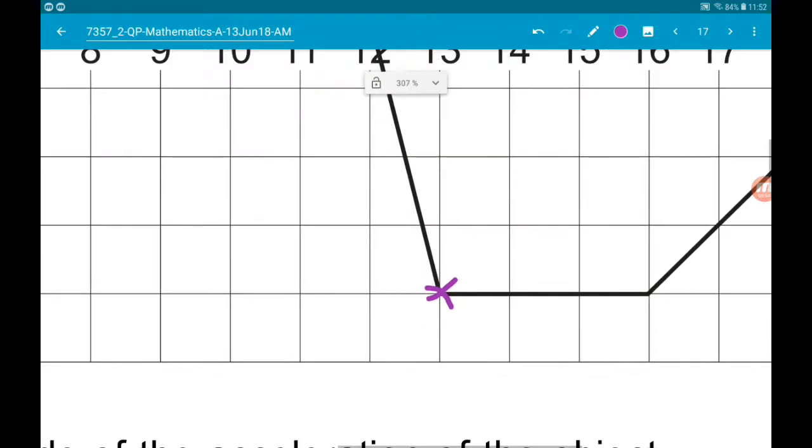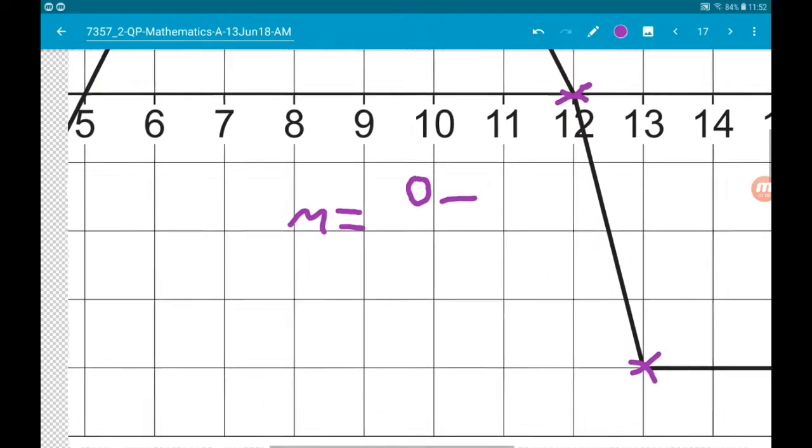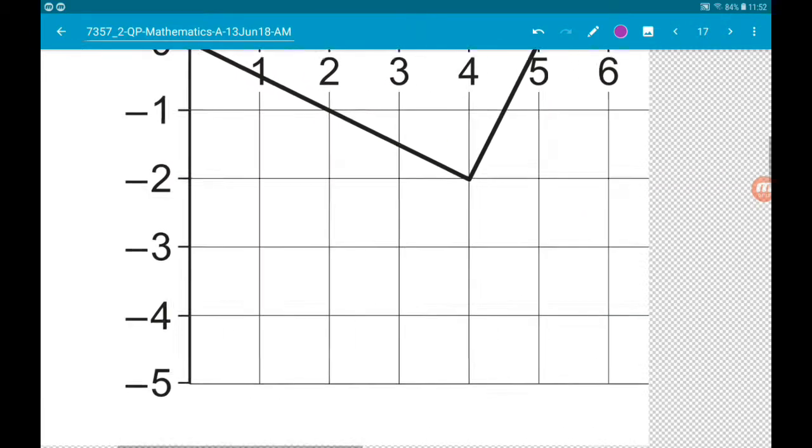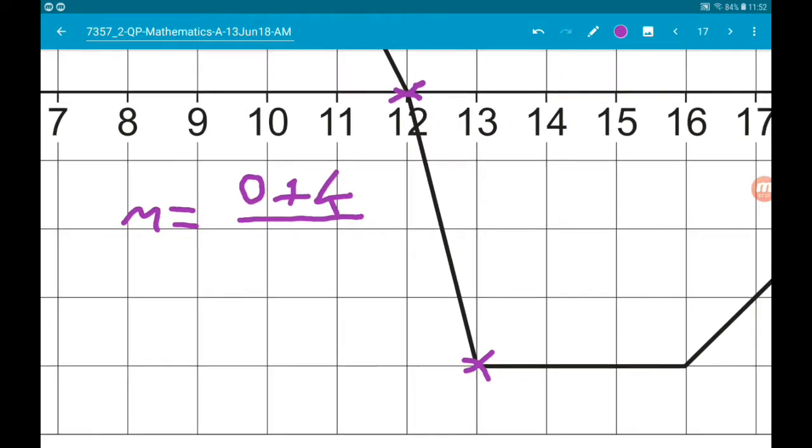So the gradient there is difference in y, so let's say 0 minus negative 4, so that's gonna be 0 add 4, over difference in x, which is gonna be 12 minus 13.